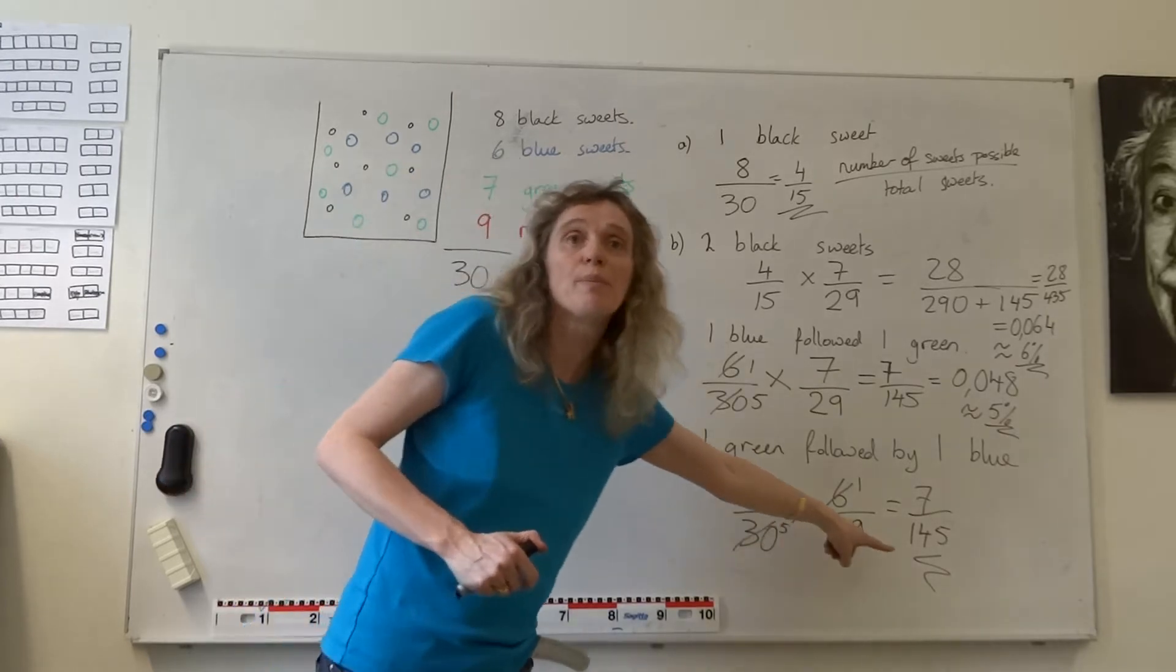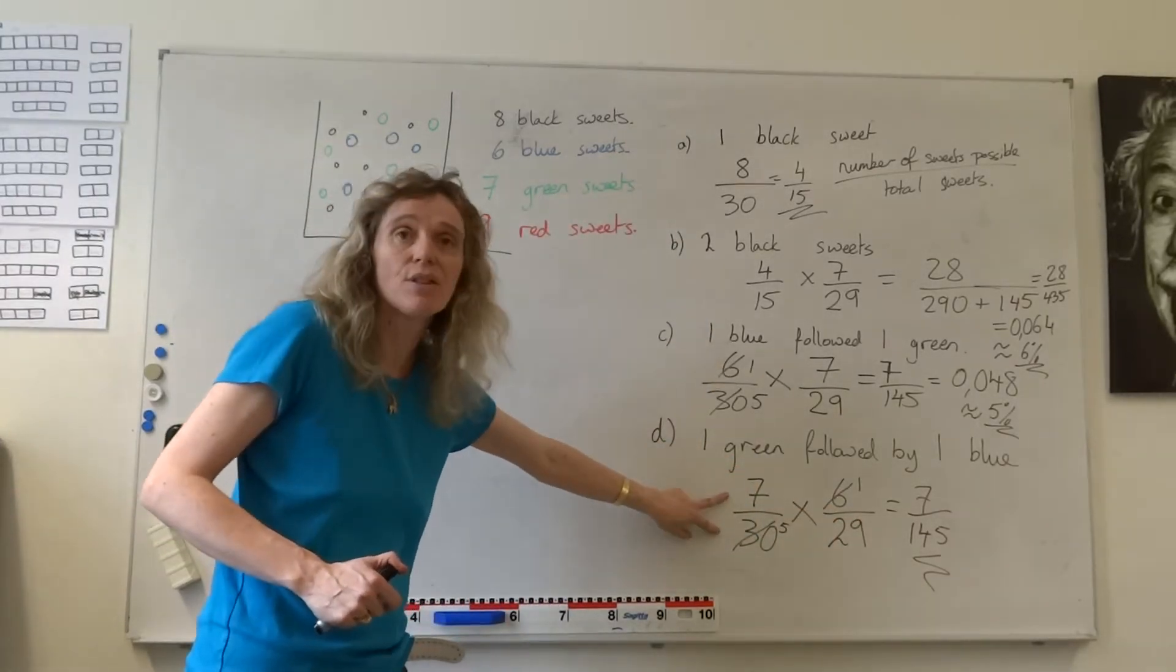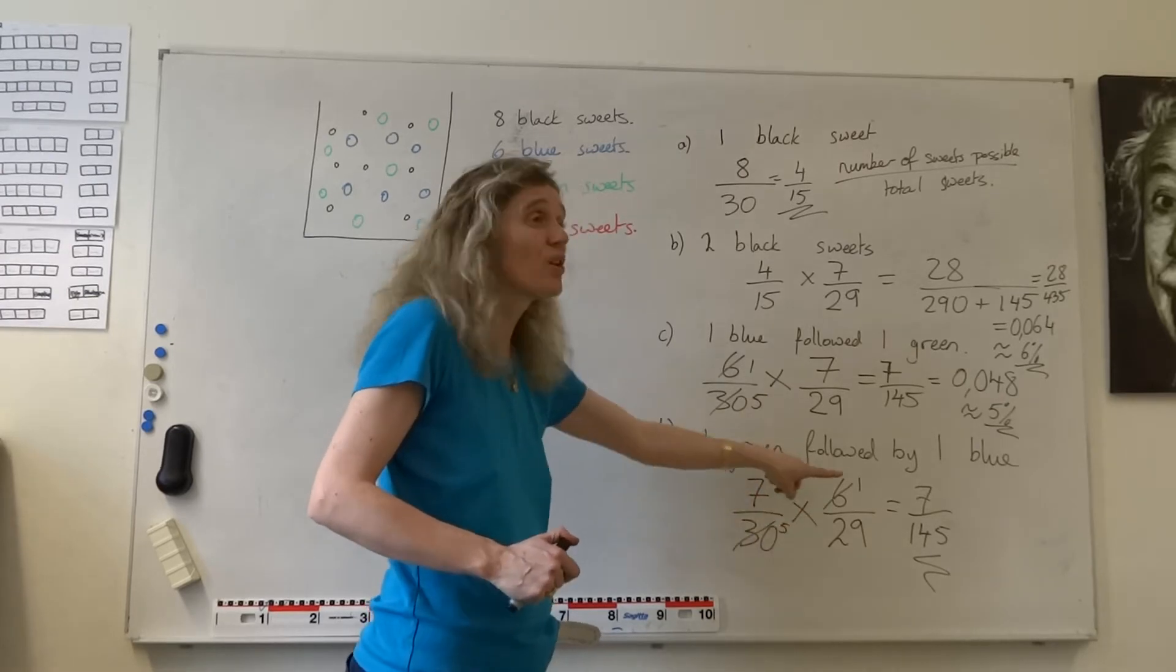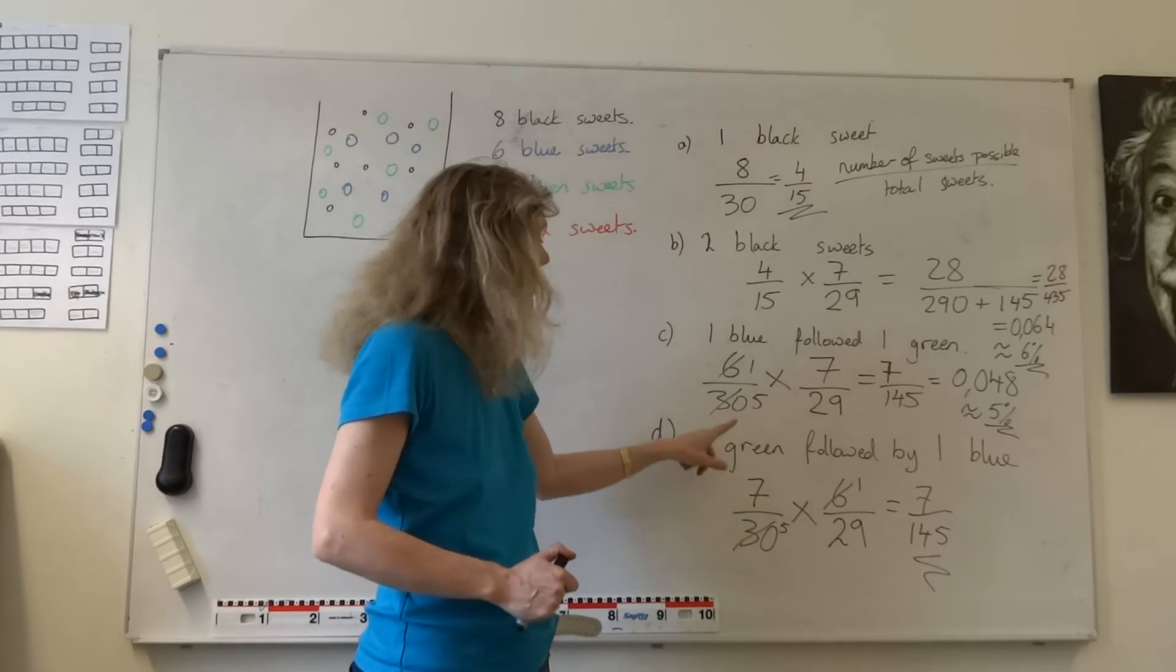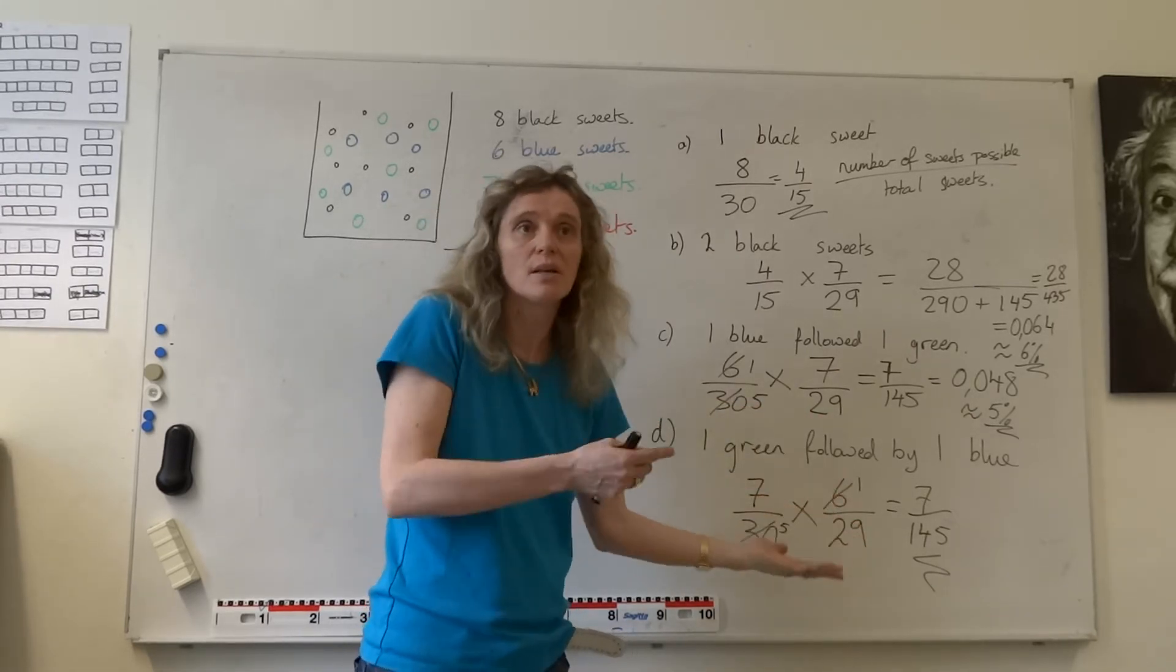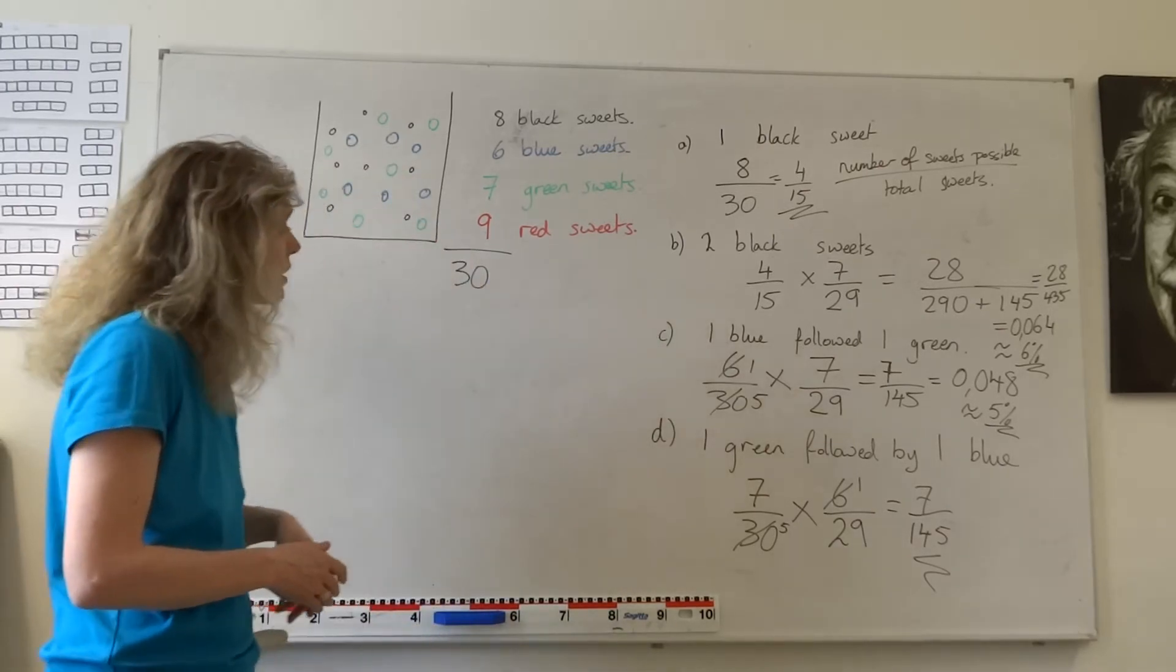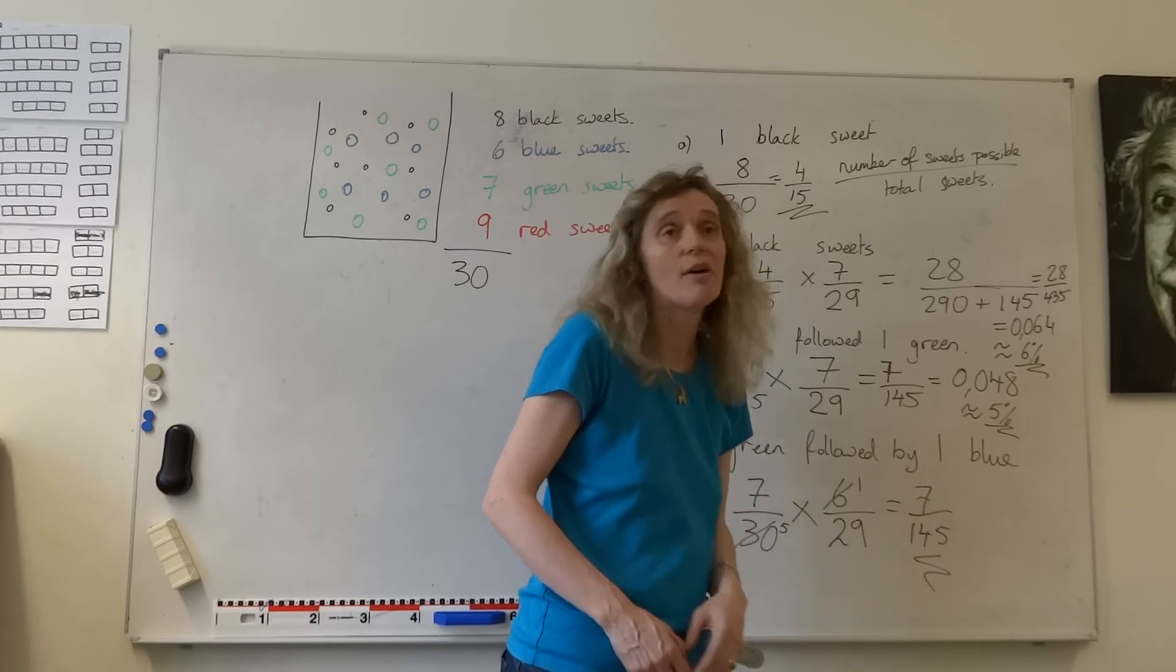Even though the individual probabilities were different, here we had six thirtieths, here we had seven thirtieths. Because we multiplied by another fraction, seven twenty-ninths compared with six twenty-ninths, we've still got the same number. Six times seven is the same as seven times six. Thirty times 29 is the same as 30 times 29, or 29 times 30. It's not going to make a difference which order we put it in. So these were actually quite interesting. It was a really good question. Because there is no difference in the probability. We'll still get about five percent.